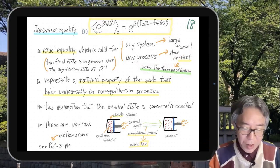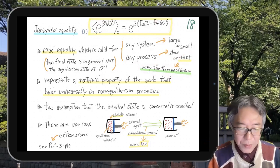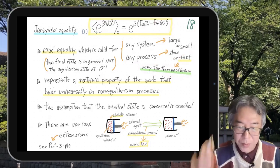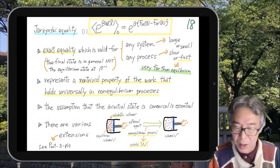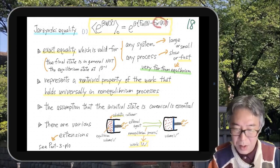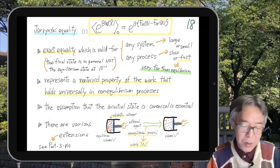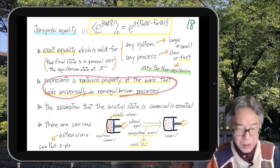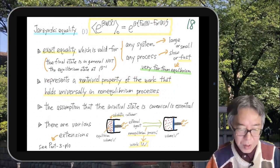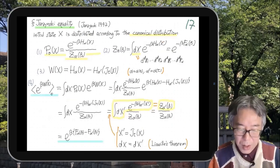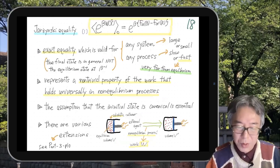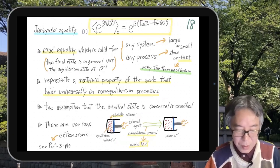One important remark: even though we started from an equilibrium state at parameter α and inverse temperature β, the final state is in general not the equilibrium state. But still this equality holds. This represents a non-trivial and surprising property of work that holds universally in non-equilibrium processes. The key assumption is that the initial state is given by the canonical distribution — this is what made the cancellation happen. With this assumption, this is an exact and interesting relation.